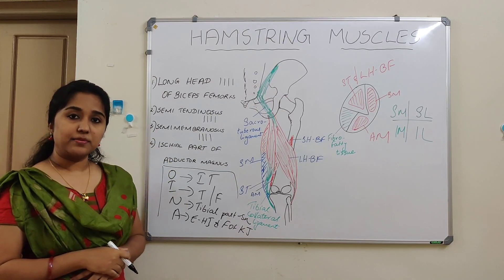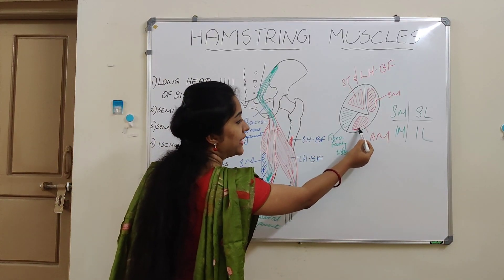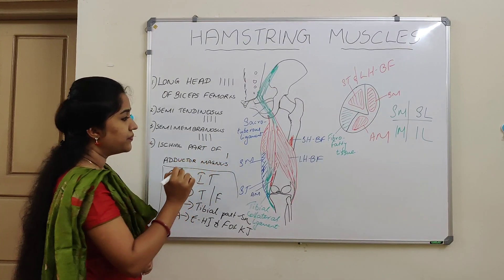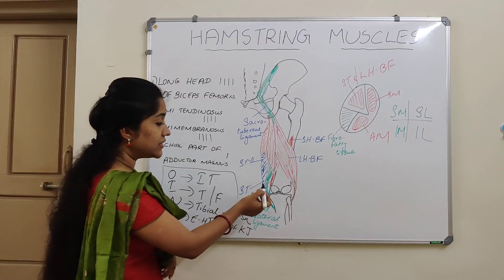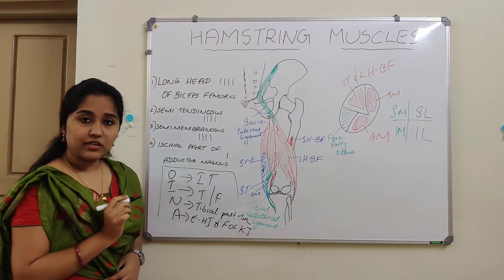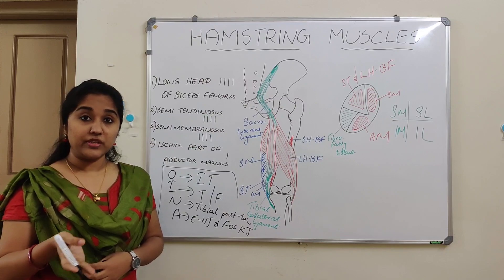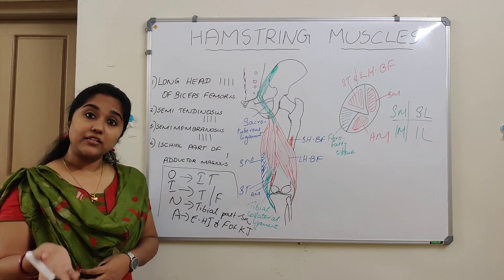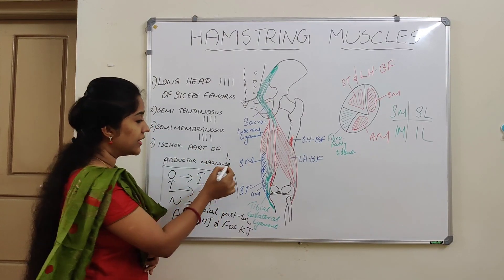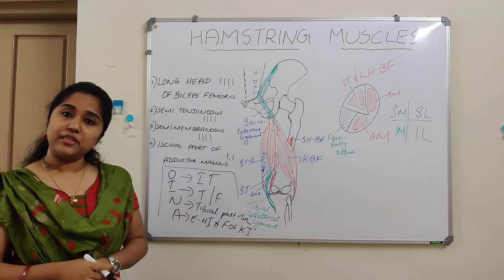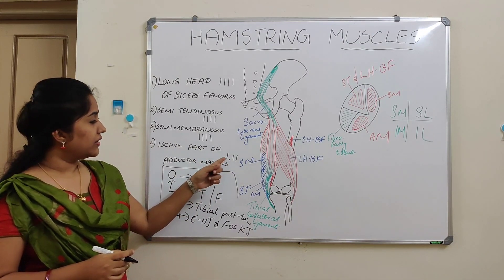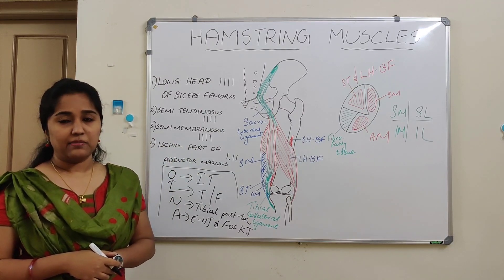What about the ischial part of adductor magnus? It takes origin from the inferolateral aspect of the ischial tuberosity, so the first criteria is fulfilled. It gets inserted into the adductor tubercle of the femur. The third and fourth criteria are fulfilled as it is supplied by the tibial part of the sciatic nerve and is an extensor of the hip joint and flexor of the knee joint. Let's see why the ischial part of adductor magnus comes under the hamstring group.